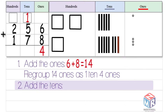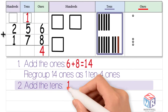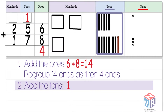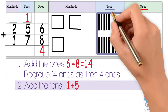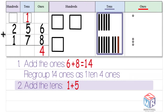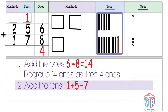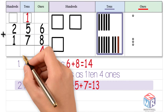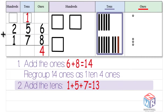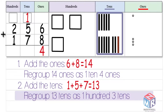Now we add the tens: one bar plus five bars plus seven bars makes 13 bars, or 13 tens. 13 can't fit into the tens place, so we regroup it as one hundred and three tens.